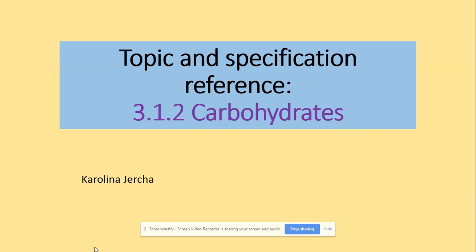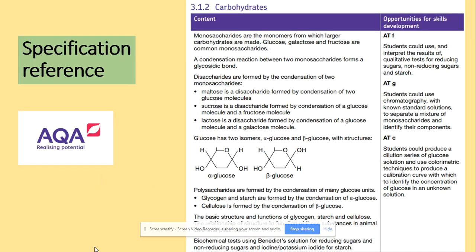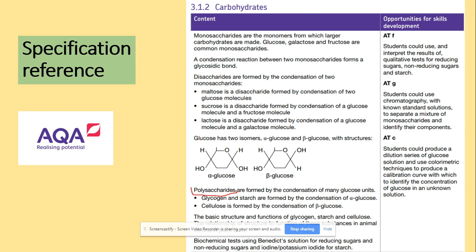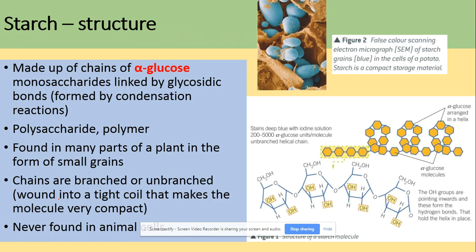Welcome to Carbohydrates. In this video we will be looking at the polysaccharides and the tests for starch. So we will start with starch. Starch is a polysaccharide, it's a polymer and it's made of chains of alpha glucose. It's really important you remember that, and they are linked by glycosidic bonds formed by condensation reaction.